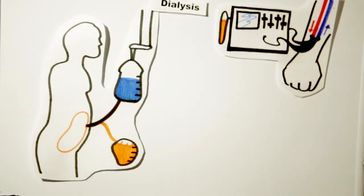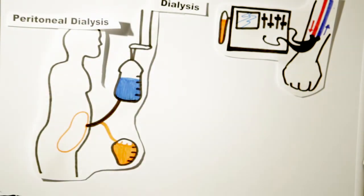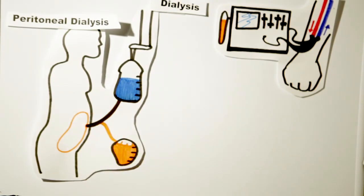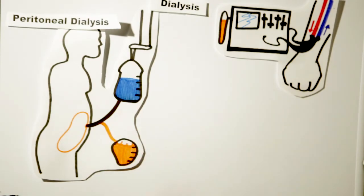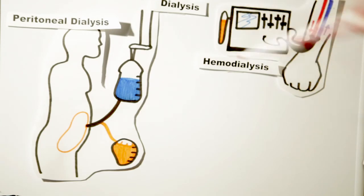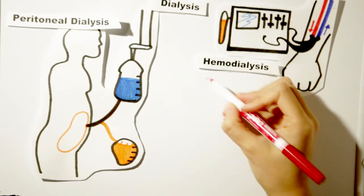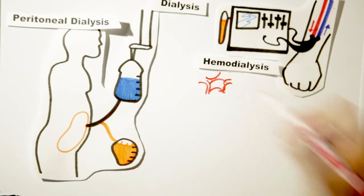Dialysis filters blood using a membrane that functions as the kidney to remove waste products and excess fluids. There are two types. Peritoneal dialysis uses a natural membrane and abdomen cavity as a filter — fluid is accumulated in the peritoneal space and drained later. Hemodialysis uses a dialyzer that filters the blood, removes waste products and excess fluids, using a coiled membrane with numerous hollow fibers to pump and filter the blood.